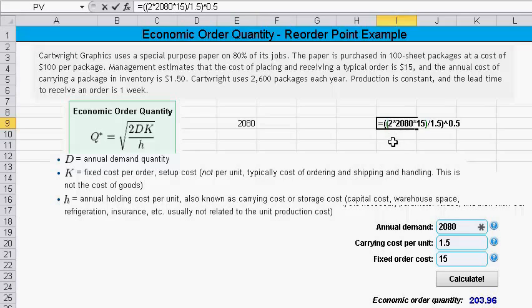So I'll hit the formula again. 2 times 2,080 times 15, $15 was the order cost, so that's the K in our formula. I'm taking 2 times 2,080 times K and dividing it by H. H is the holding cost or the carrying cost and they tell us that's $1.50.